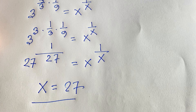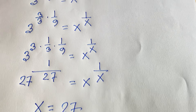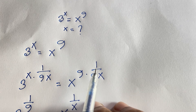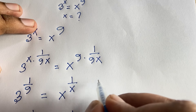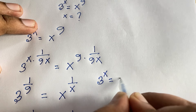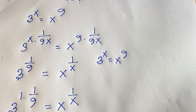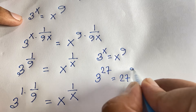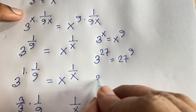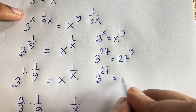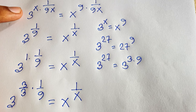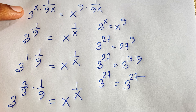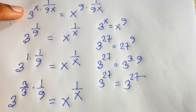Now let's verify. Our question is 3 to the power x equals x to the power 9. Substituting x equals 27: the right side is 27 to the power 9. Since 27 equals 3 to the power 3, that is 3 to the power 3 times 9, which is 3 to the power 27. The left side is also 3 to the power 27. So 3 to the power 27 equals 3 to the power 27. Confirmed — x equals 27 is correct.